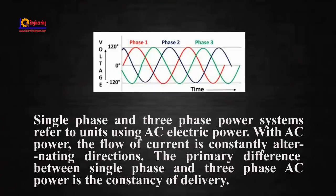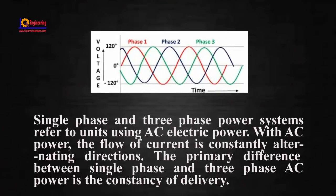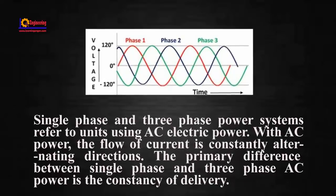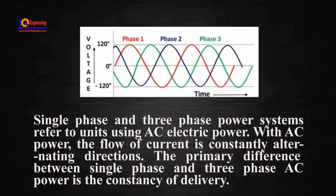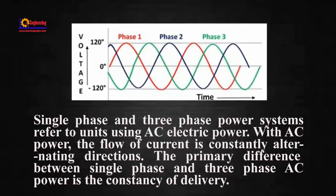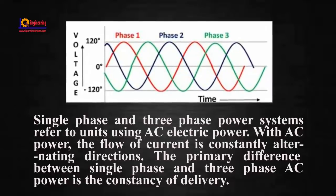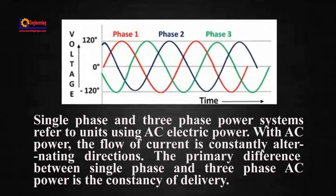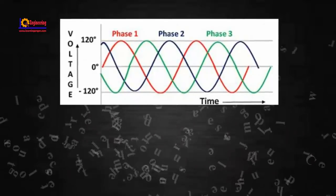Single-phase and three-phase power systems refer to units using AC electric power. With AC power, the flow of current is constantly alternating directions. The primary difference between single-phase and three-phase AC power is the constancy of delivery.